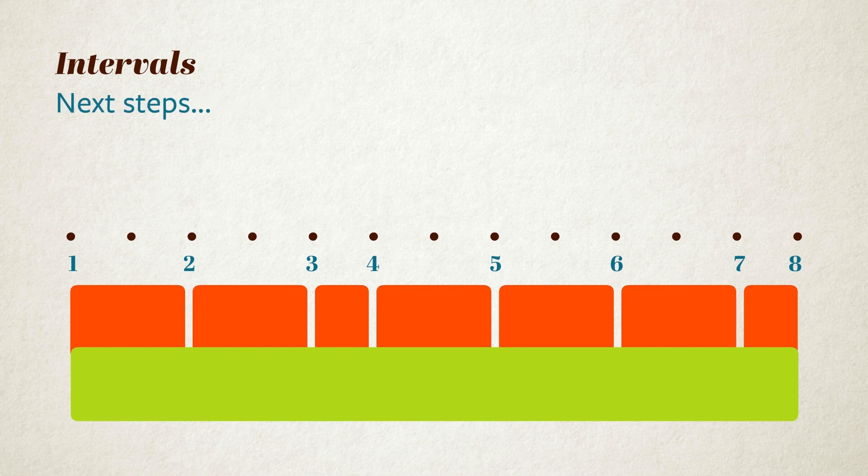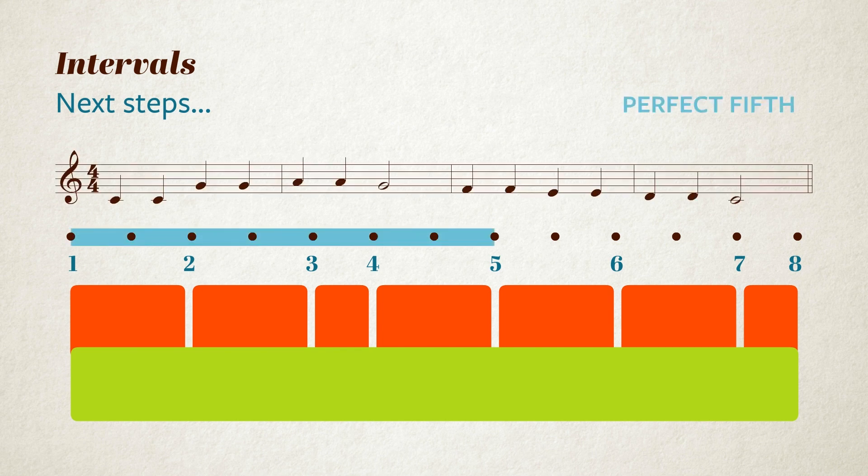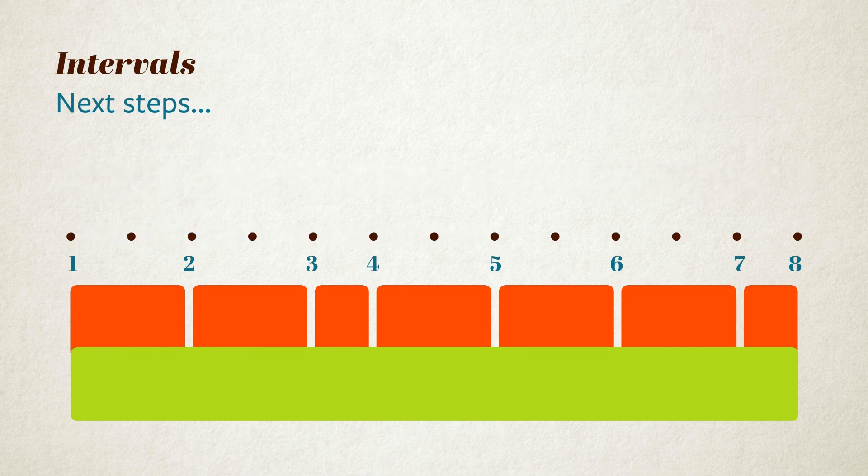The next step, if you want to understand the nature of intervals, is to get used to the sound of them and ideally to get to a point where you can sing them up and down. There are lots of very famous examples of various intervals that appear in tunes, like the perfect fifth at the start of Twinkle Twinkle Little Star. Hearing the way intervals sound and being able to recognise them will give your music a much more intuitive and ear-based foundation.